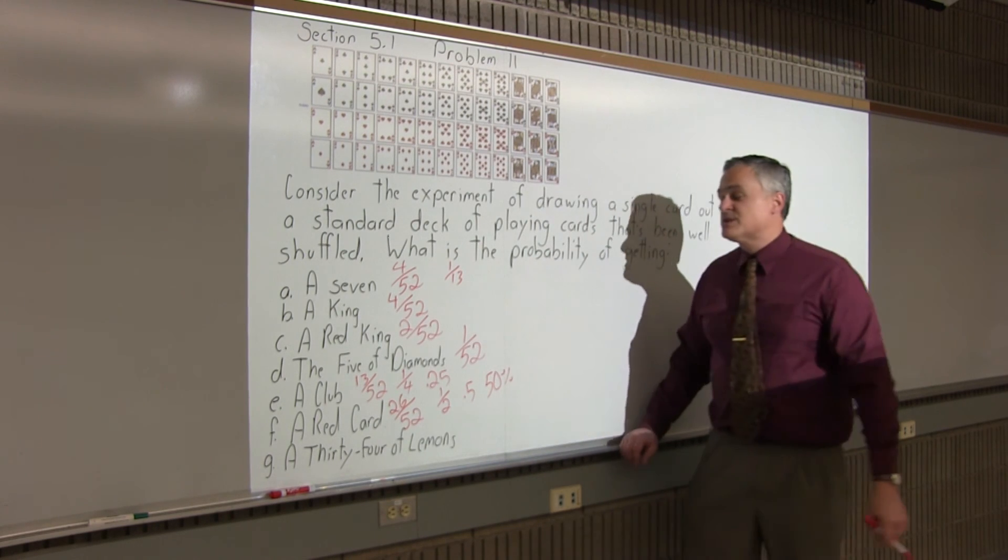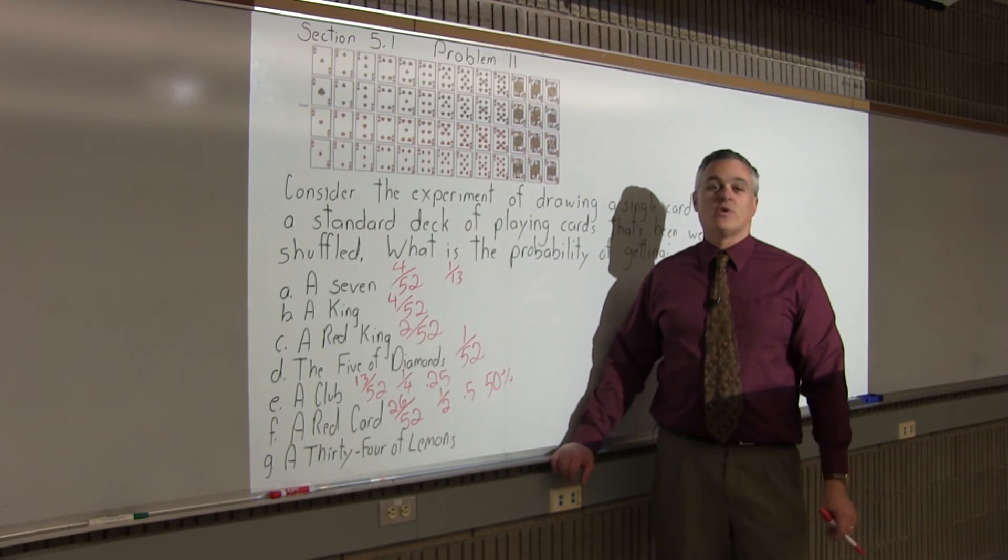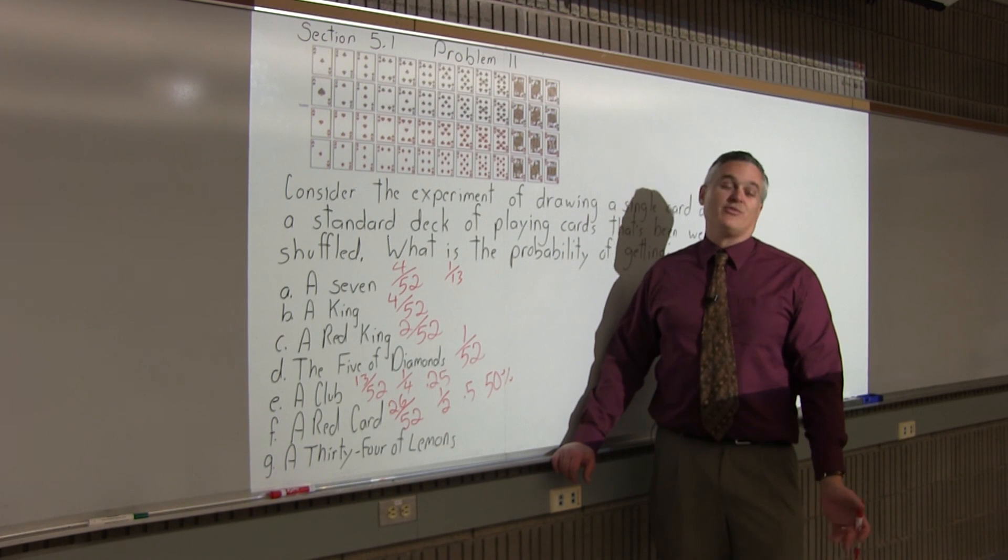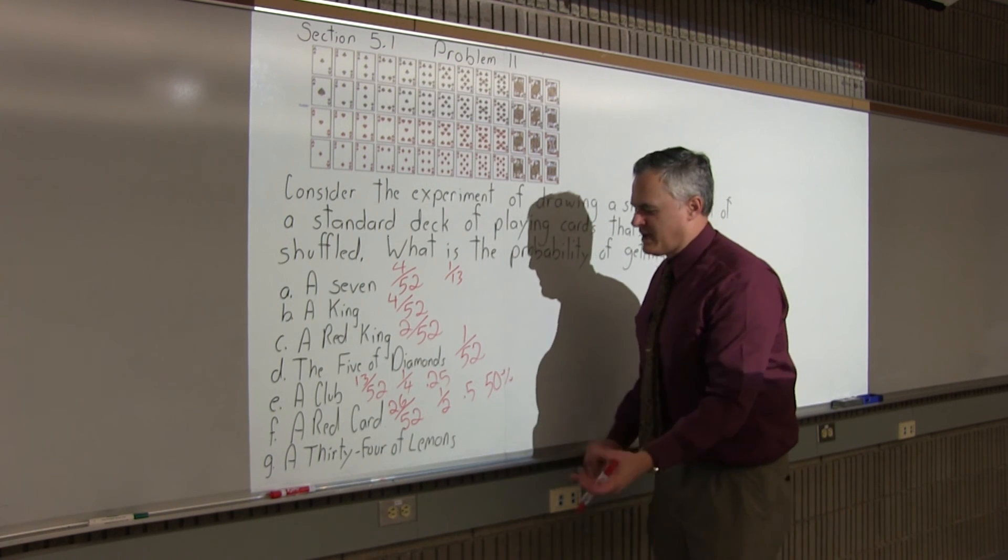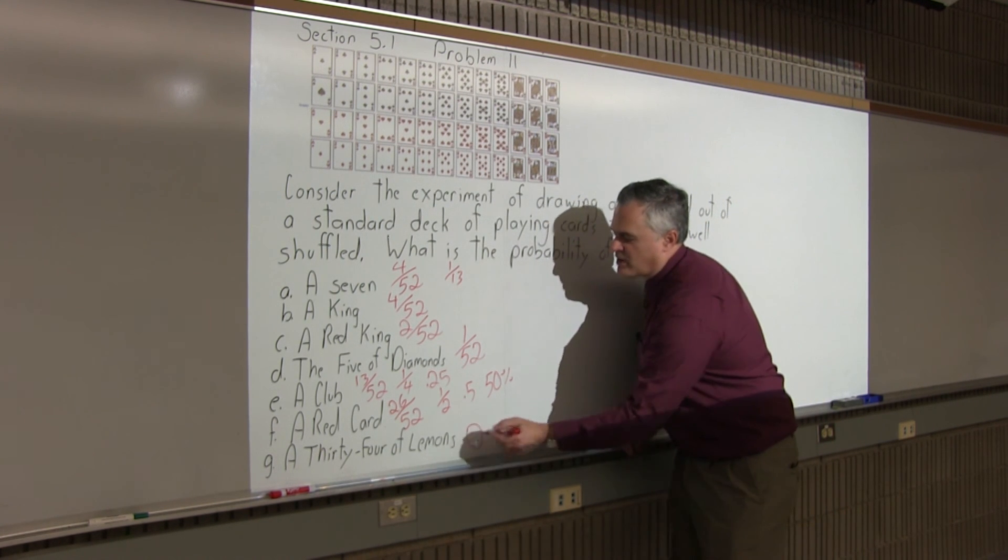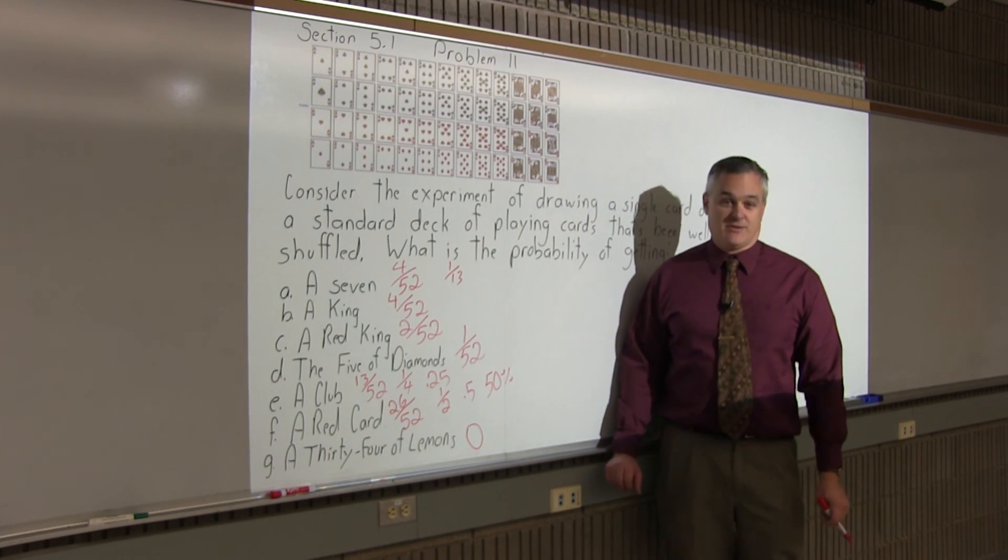And the last one's kind of silly. What's the probability of getting a card that's a 34 of lemons? There's no 34 of lemons. They just made up a card, made up a suit. So, of course, the probability of getting a non-existent card would be 0.